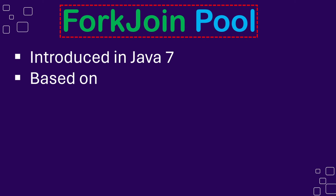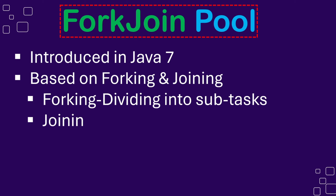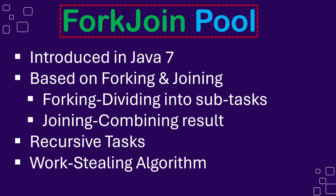A fork join pool in Java is a special type of executor service. It was introduced in Java 7 for enhancing parallel programming. There are mainly two operations: first is forking, which means dividing the task into multiple subtasks. Second is join — once the forked tasks are executed, the results of those tasks will be joined back. It is mainly optimized for recursive task execution, where tasks can be split into smaller subtasks and then the results are joined in the end.